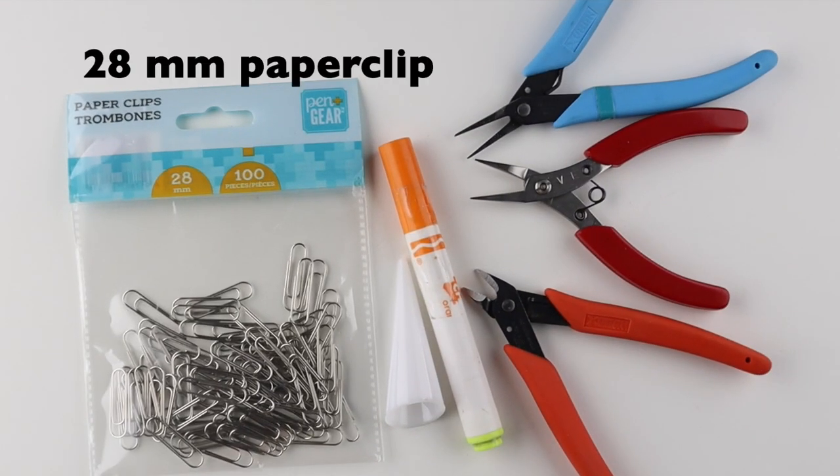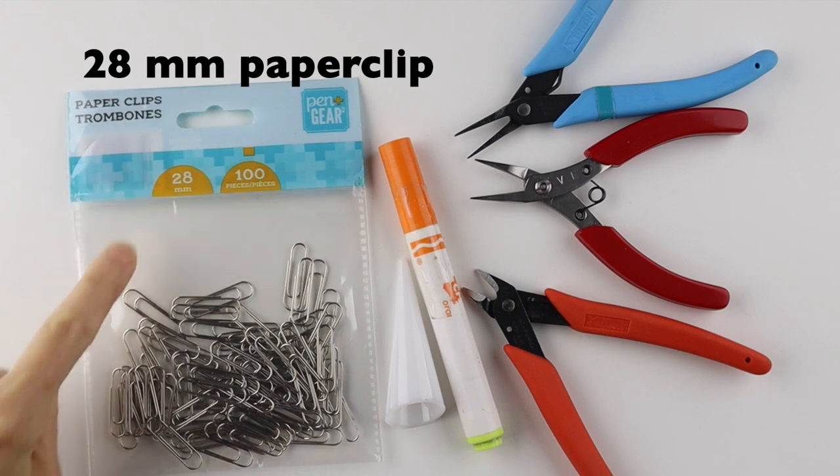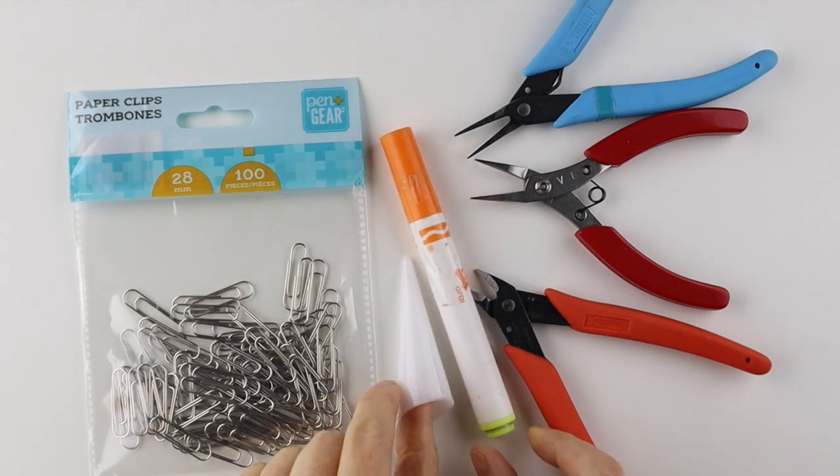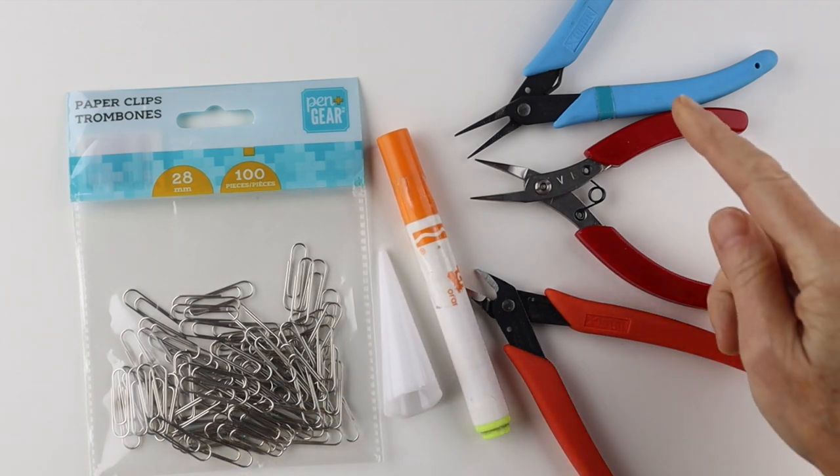For the paperclip rings, I use the 28 mm regular size paperclip. You need a round form, so a marker or a ring cone, and your tools.